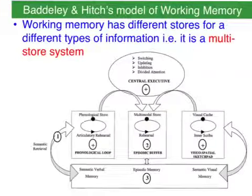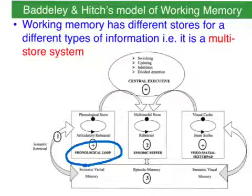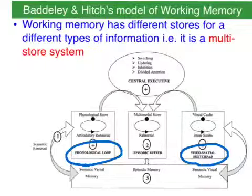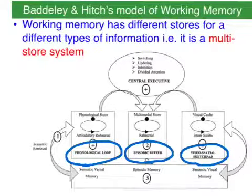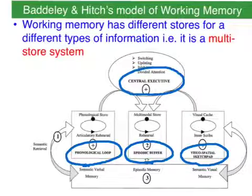So Baddeley and Hitch devised this multi-store system for the middle stage of memory, comprising the slave systems: the phonological loop for verbal memory, the visuospatial sketchpad largely involved in navigation, the episodic buffer — we'll talk about that role a bit later — and the boss of these slave systems, of course, the central executive.